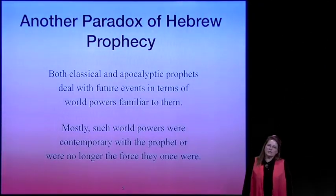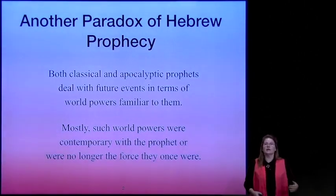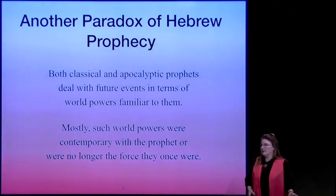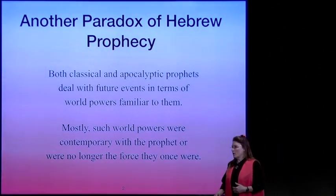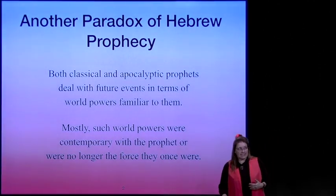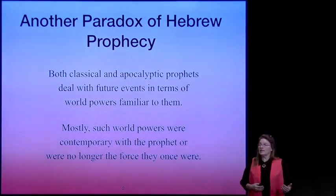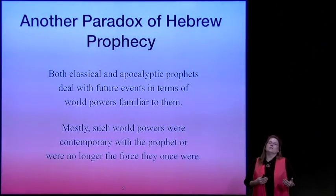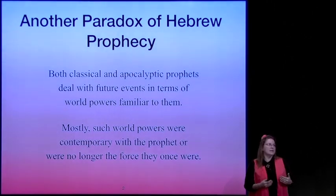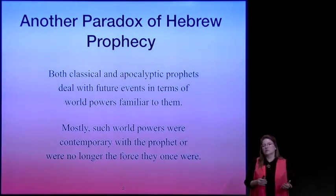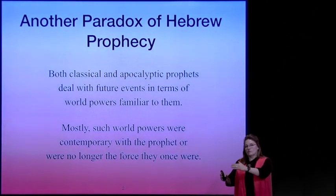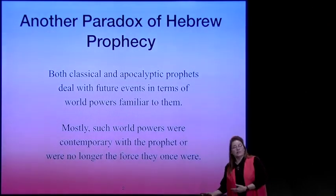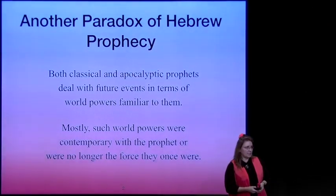Let's start off with a little bit of a review. We talked about classical prophecy being prophecies that were fulfilled historically, and we talked about apocalyptic prophecy—prophecies of the end time. We've been learning that classical prophets often chose what they said historically to also be a type of future apocalyptic prophecy as well.